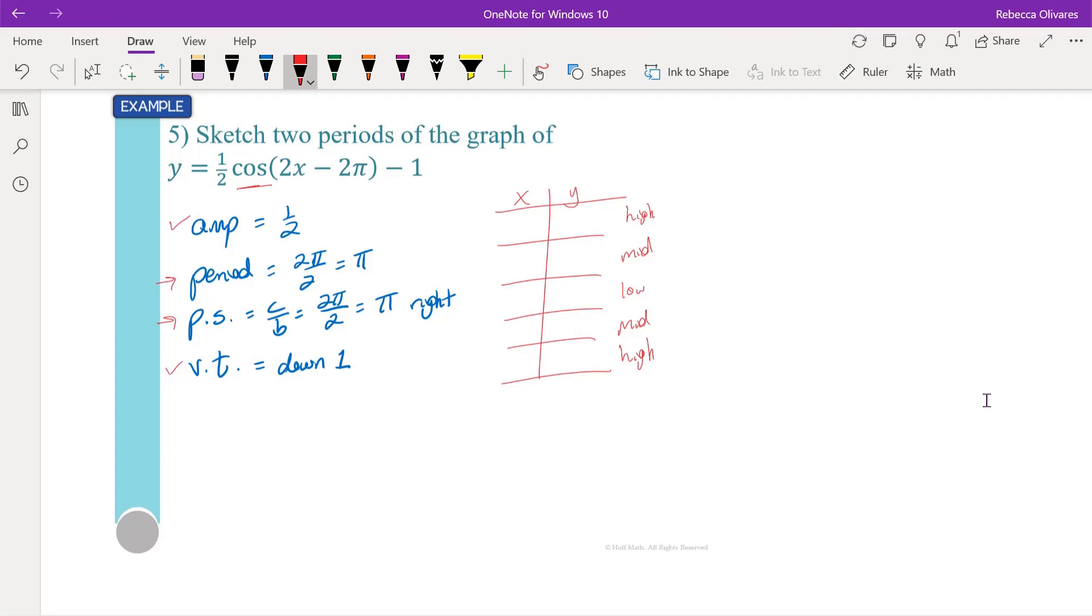The vertical one is easier to do, so let's start there. We know that if we've gone down 1, well that's going to be the axis that the graph is going to oscillate about. That means that the midline is going to be at negative 1.